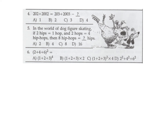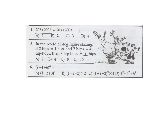2002 plus 2002 equals 2003 plus 2003 minus some question mark. The first expression is 4004 and the second, 2003 plus 2003, is 4006. So 4004 equals 4006 minus the question mark, meaning the question mark is 2. Number 4, the answer is B.